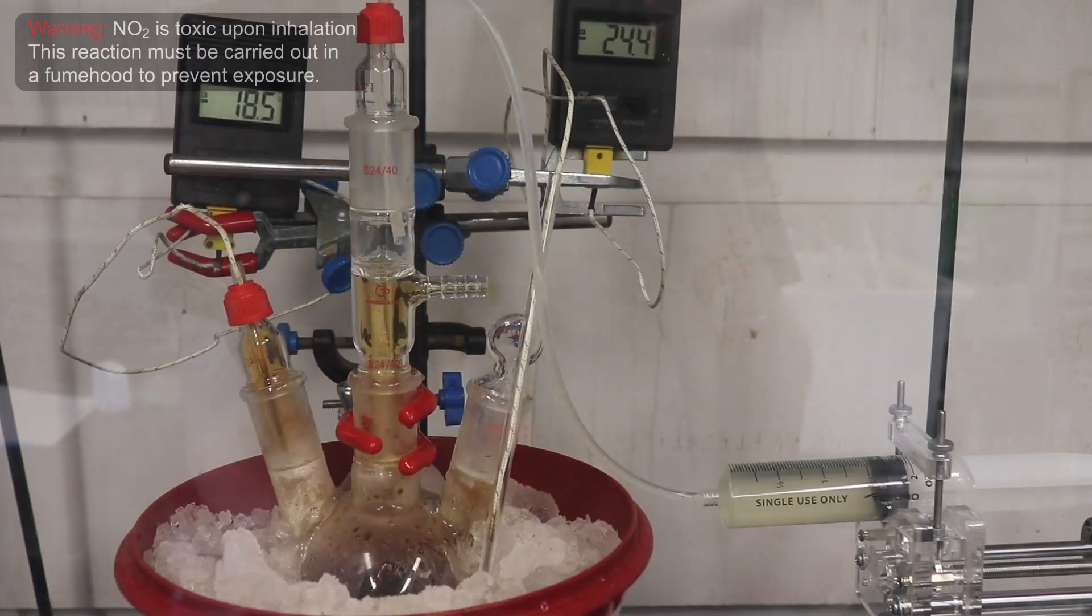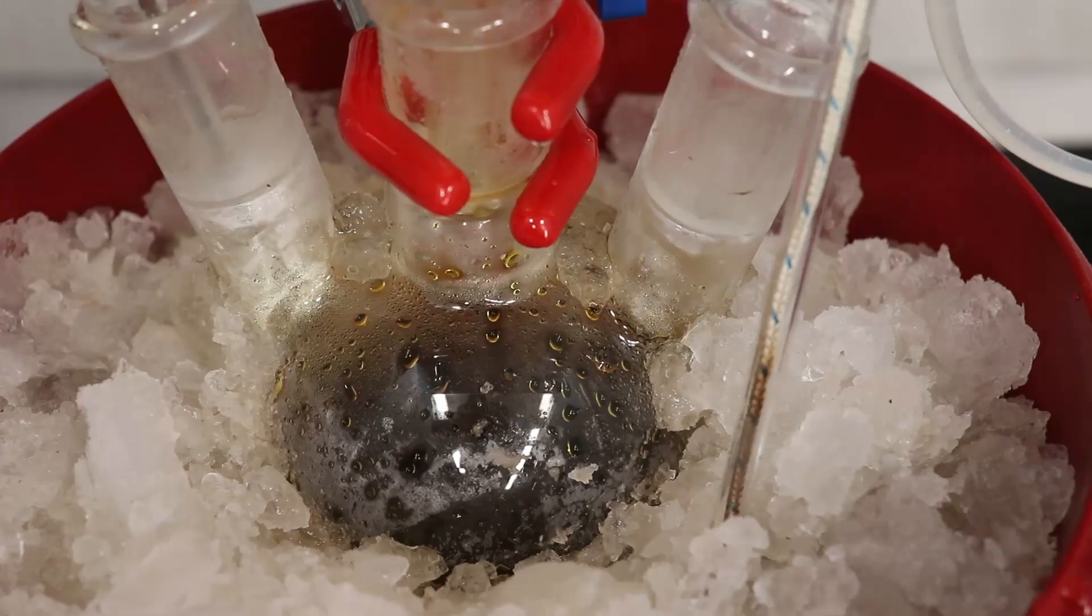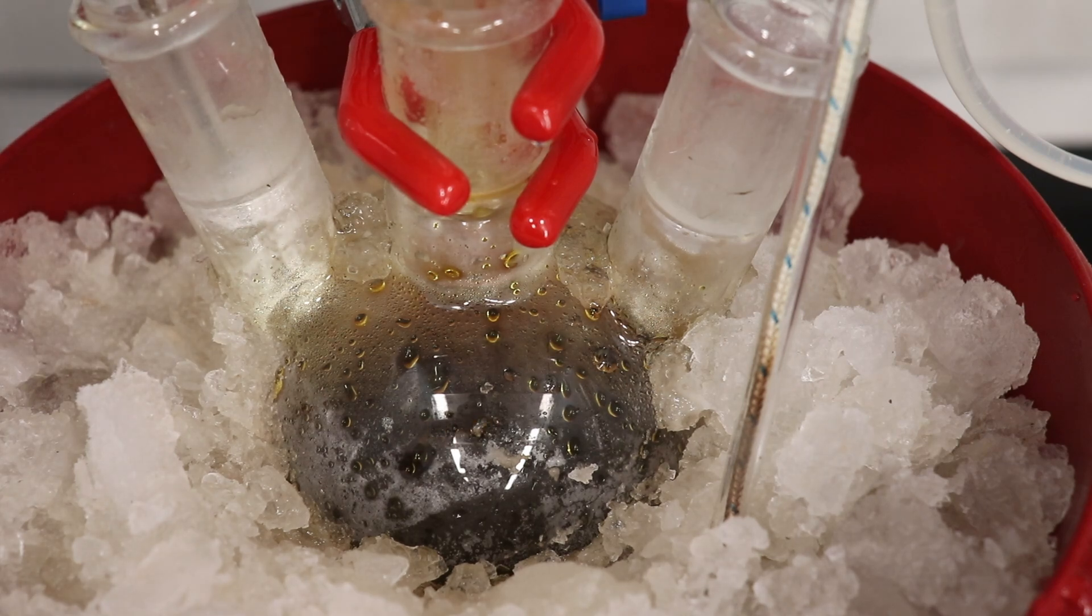At times, a stream of nitrogen dioxide gas can be seen escaping from the flask, and so using a fume hood for this reaction is essential. Also, the contents of the flask are nearly black due to the copious amounts of nitrogen dioxide dissolved in solution.